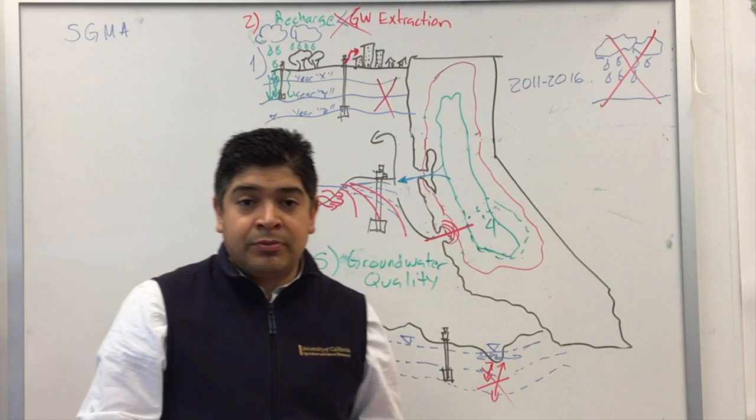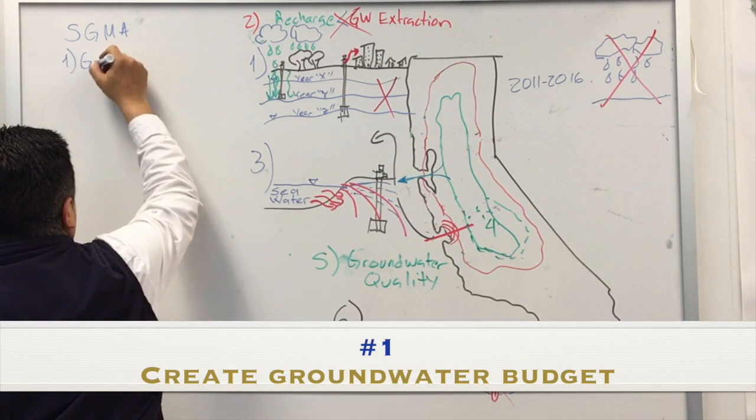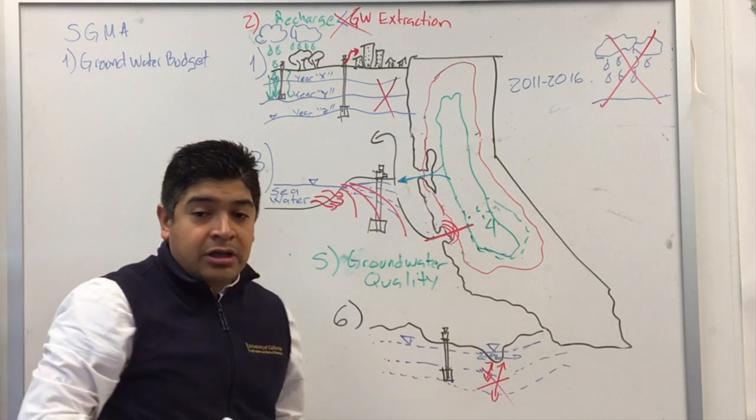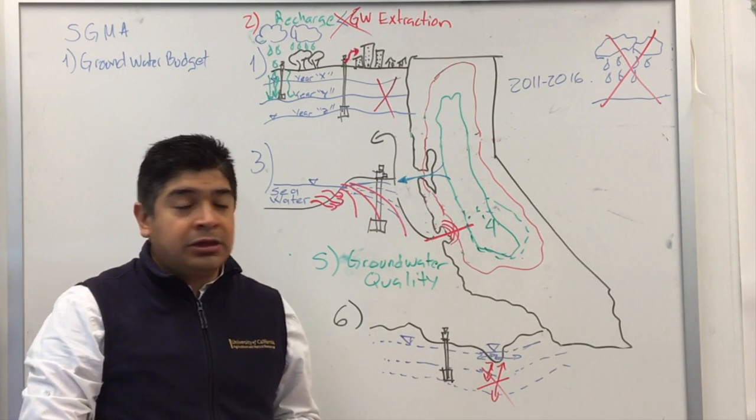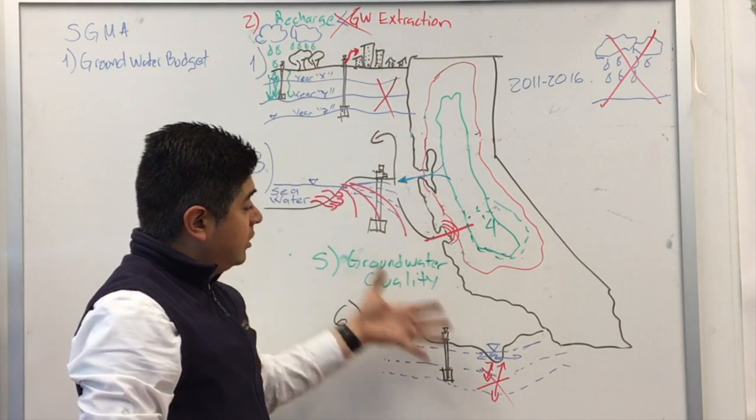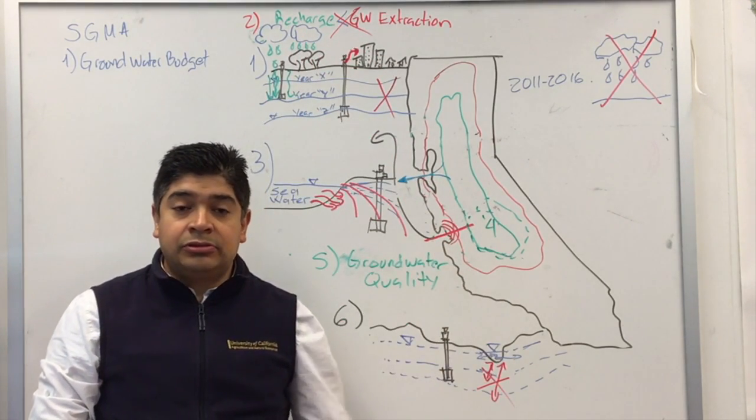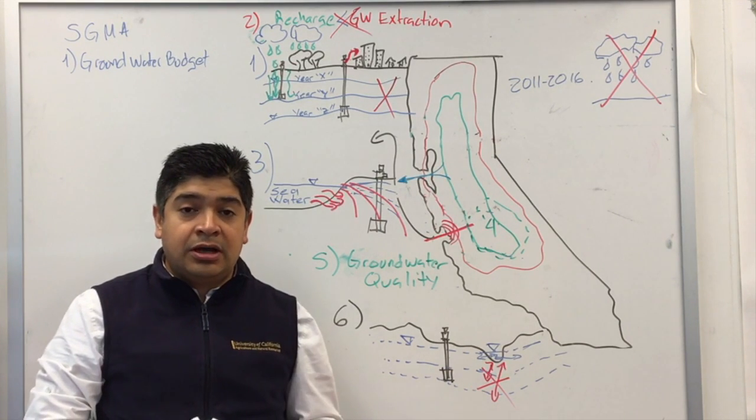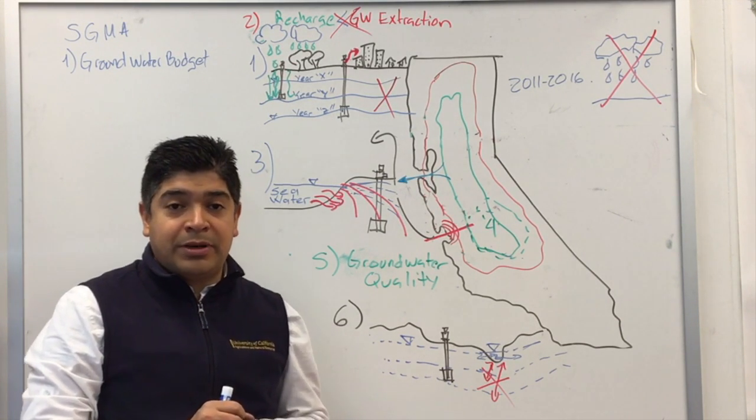Number one, a groundwater budget will be created. So this groundwater budget will develop a diagnosis to see if any of these six undesirable results are happening or not happening in your groundwater basin.